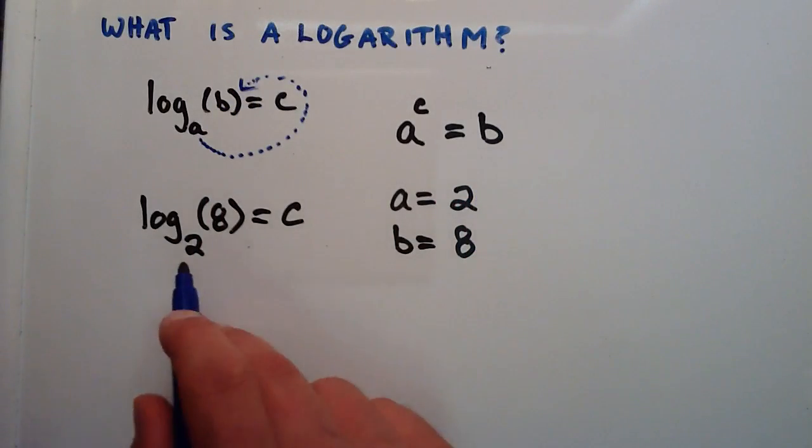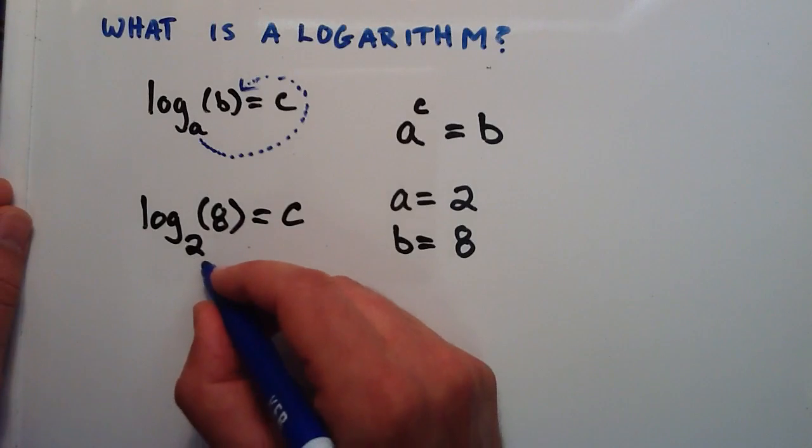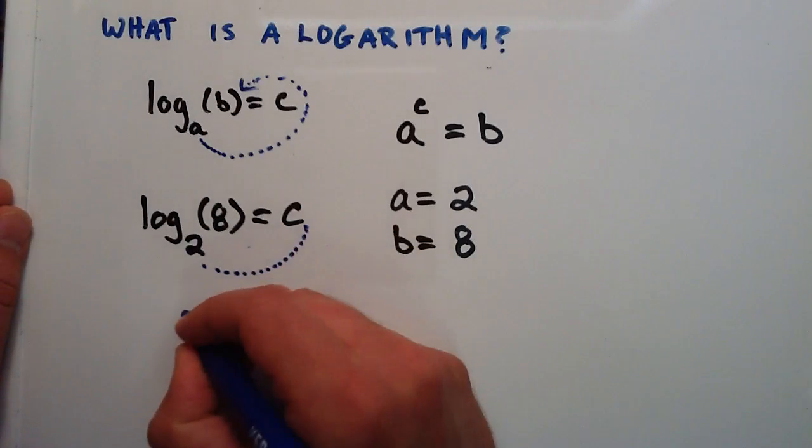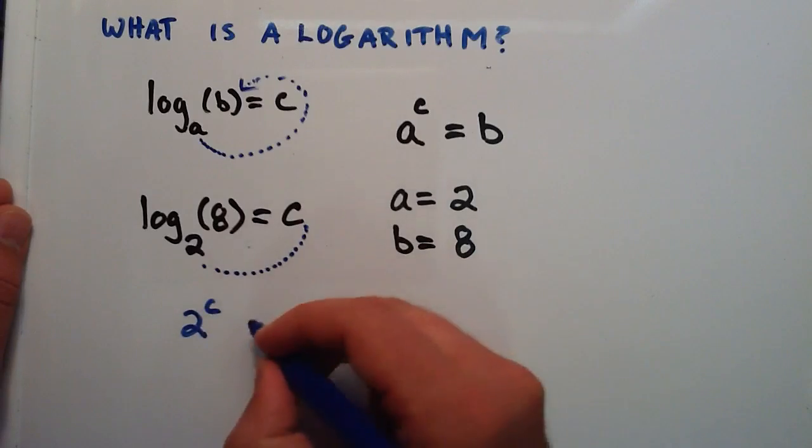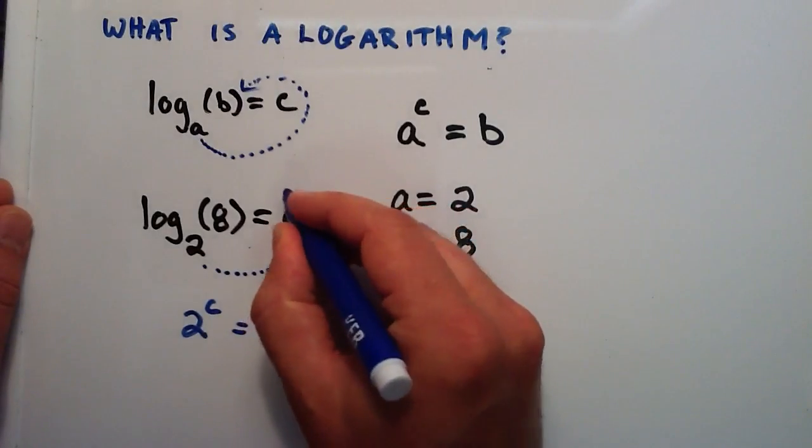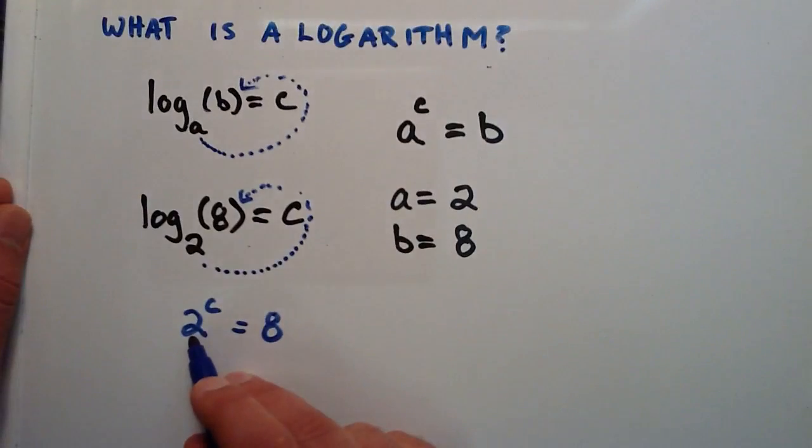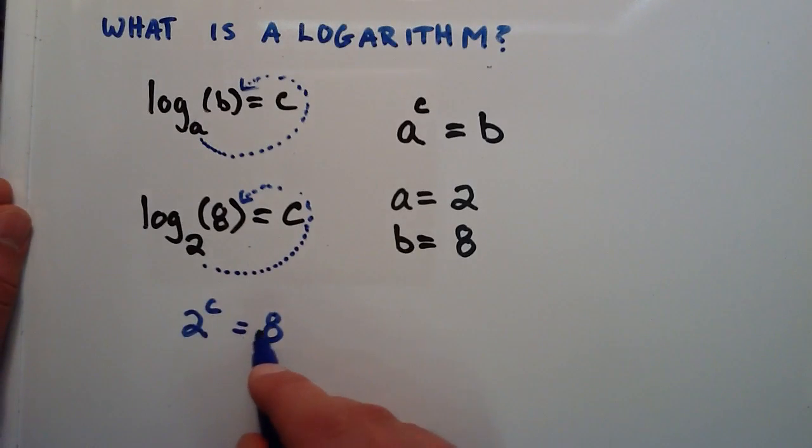So okay, what we're asking here now, doing the scorpion tail technique, is we're saying 2 raised to the C power is equal to 8. So what does 2 have to be raised to in order to equal 8? So 2 to what power equals 8?